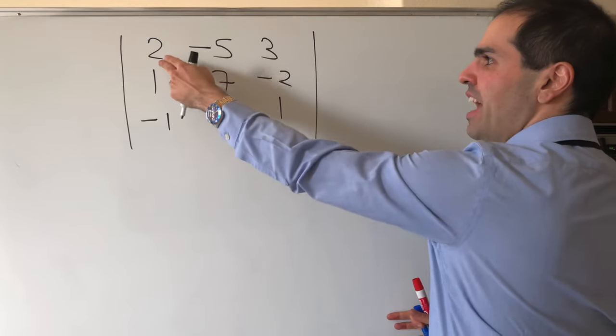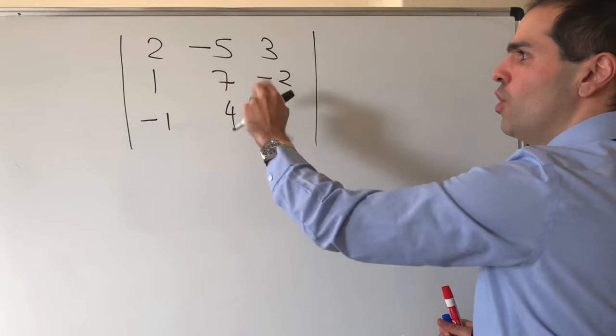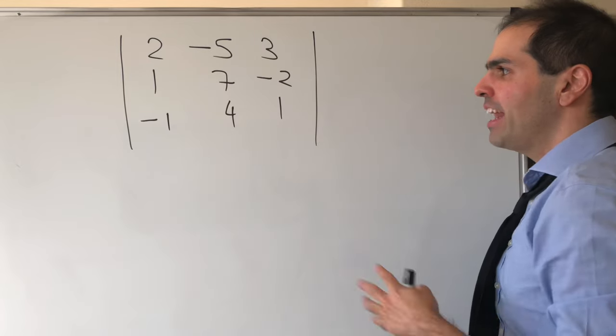For instance, how do we calculate the determinant of 2, minus 5, 3, 1, 7, minus 2, minus 1, 4, 1?